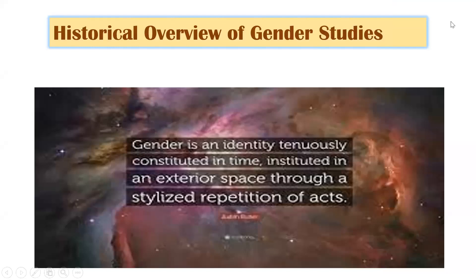So you can see I am beginning with the quote: 'Gender and identity continuously constituted in time, instituted in an exterior space through a stylized repetition of acts.' This is by Judith Butler. Judith Butler conveys that gender is a performance — we are continuously performing our gender, our gender identities.